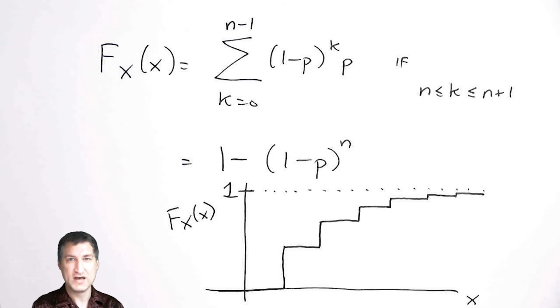but values that can be any value on the real line. So I'm going to use the CDF to define what is a continuous random variable, and that's going to be the next lesson.